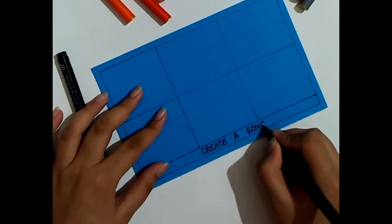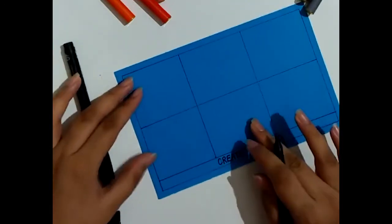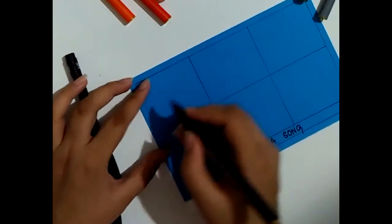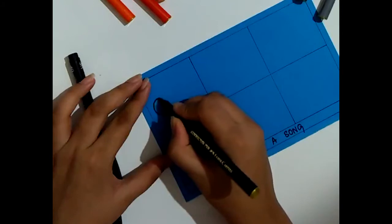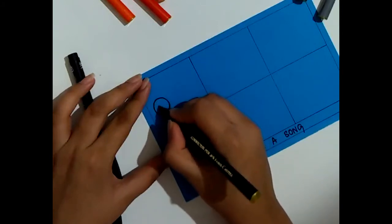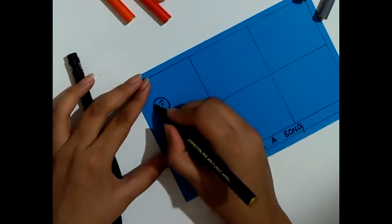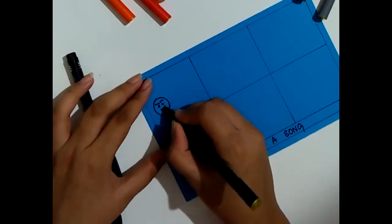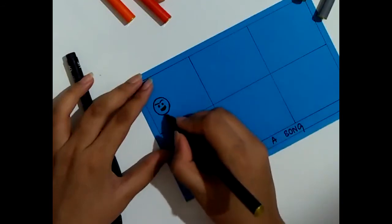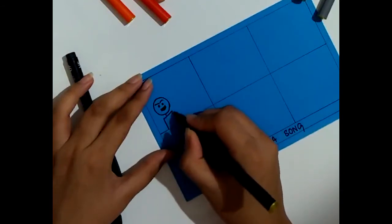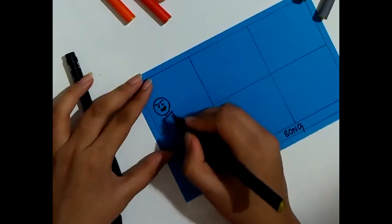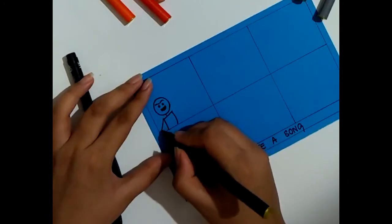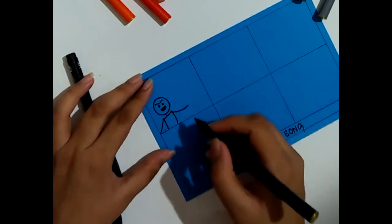For the first scene we'll draw a person who is trying to sing the song. This would be the face, eyes, and the person singing. I'll make the body of the person and the hands.